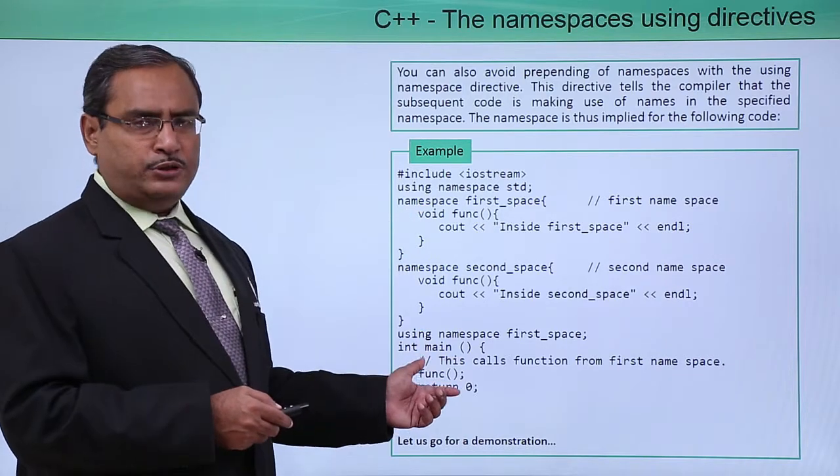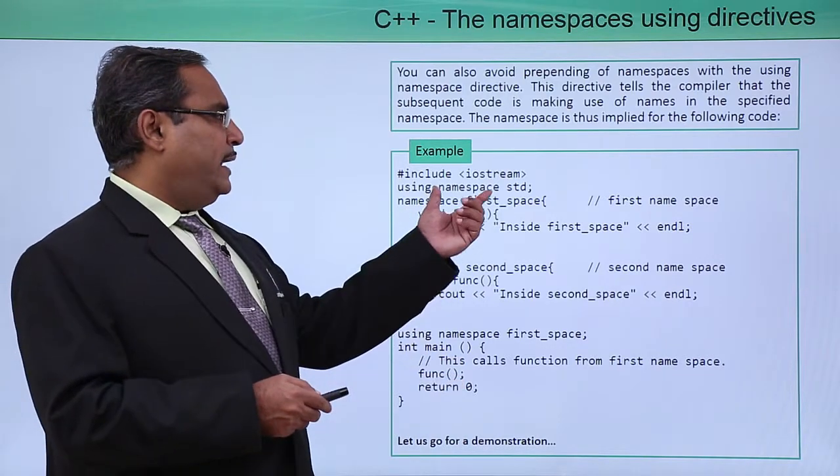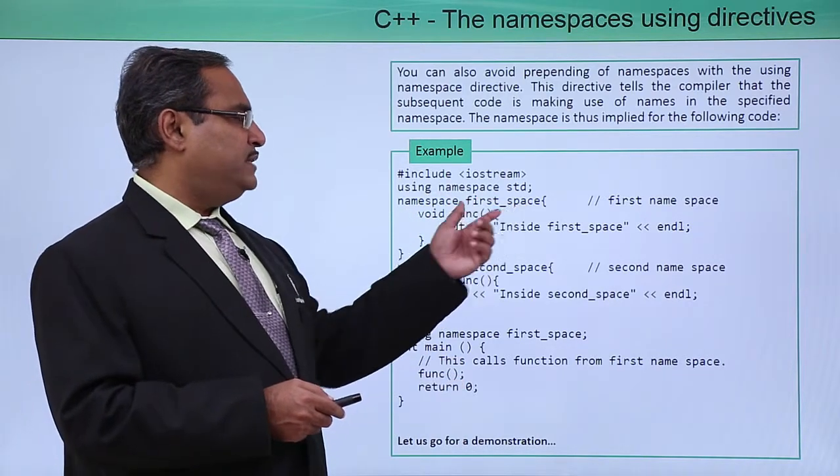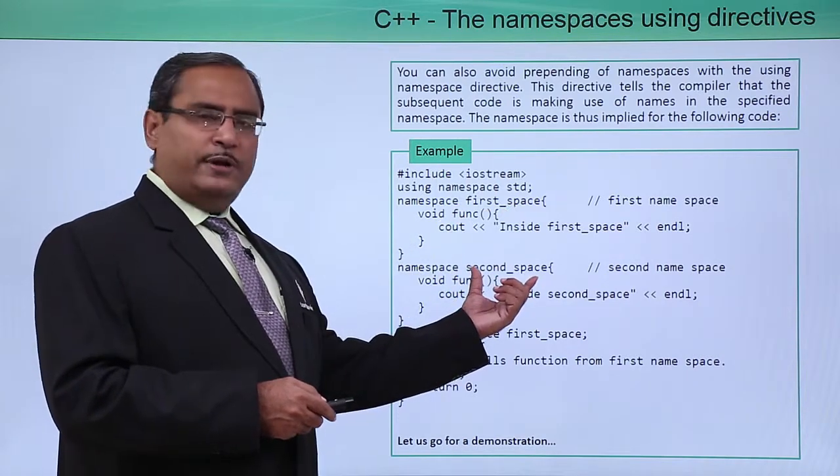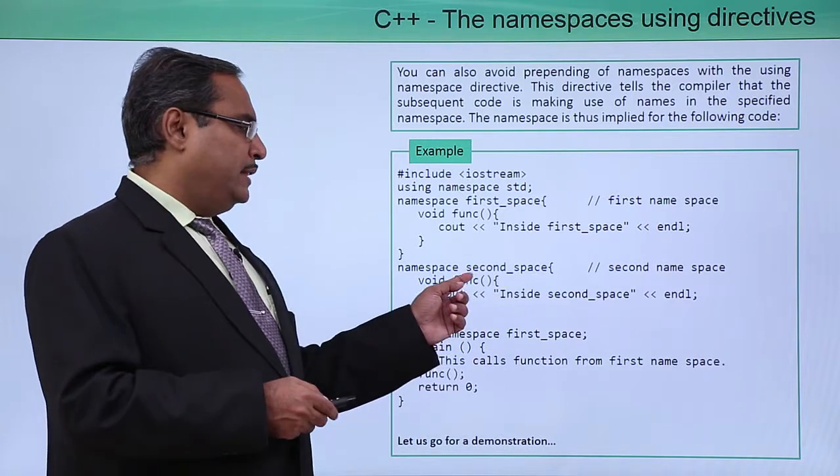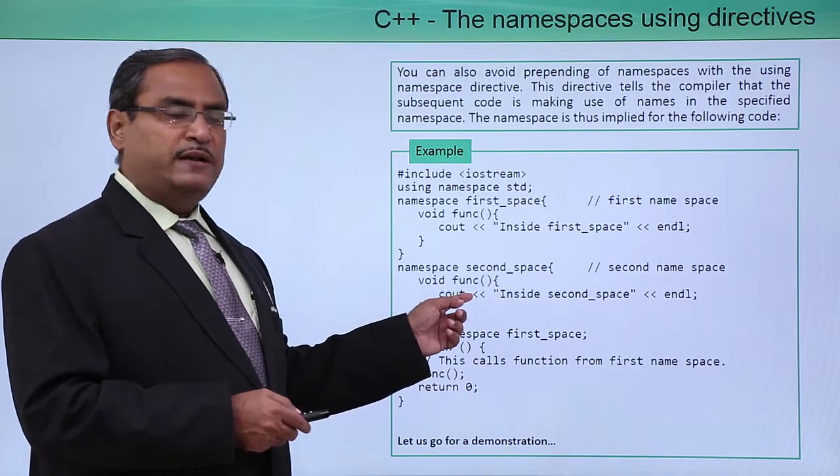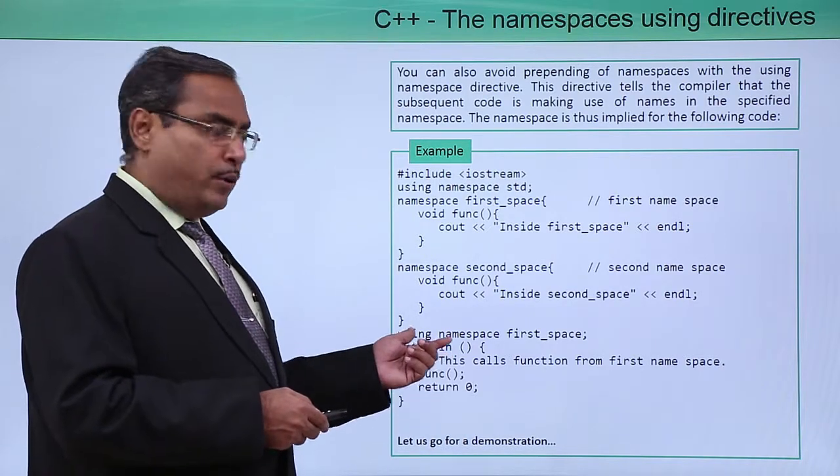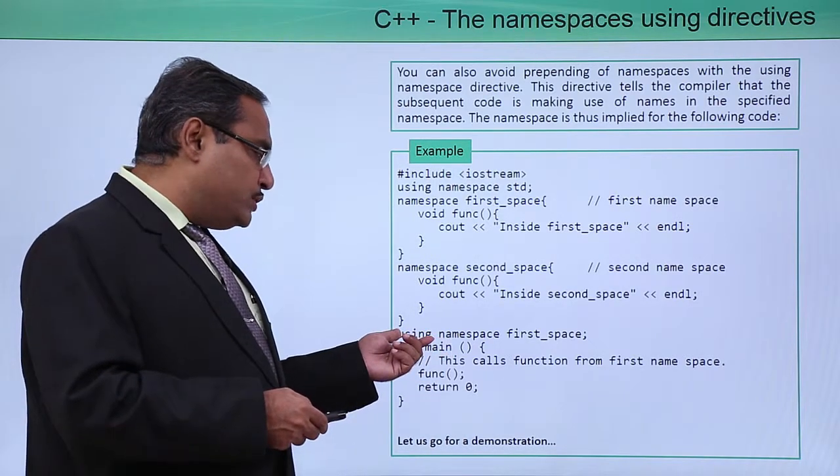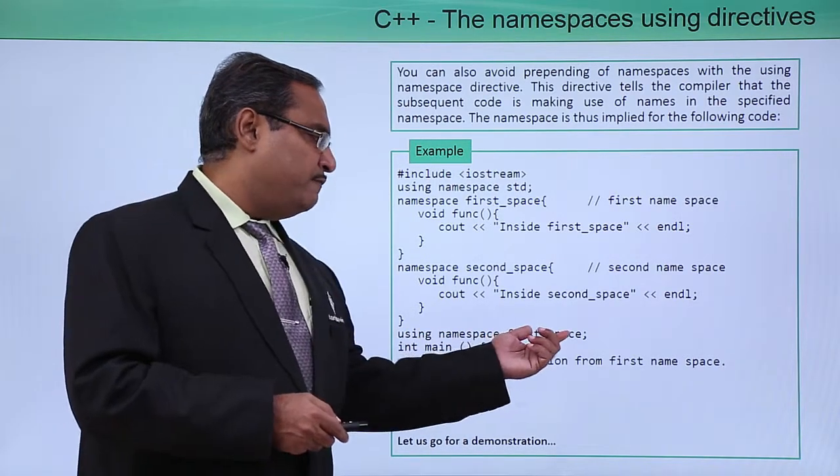Now we are having the same example which we had earlier also. We are having this namespace that is the first space having one function defined, another namespace having the second space having the same prototype function, but defined in a different way. Now in the main function before going we are writing using namespace first space.